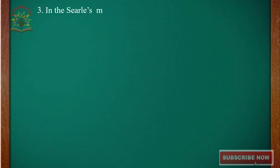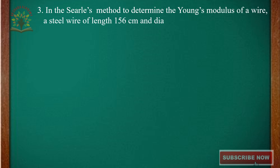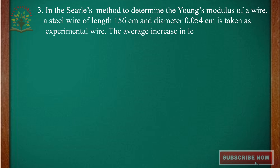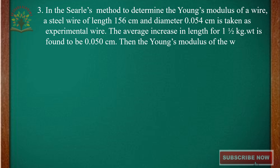Let us go to question number 3. In Searle's method to determine the Young's Modulus of a wire, a steel wire of length 156 cm and diameter 0.054 cm is taken as the experimental wire. The average increase in length for a 1.5 kg weight is found to be 0.050 cm. You have to calculate the Young's Modulus of the wire.